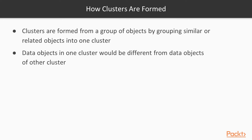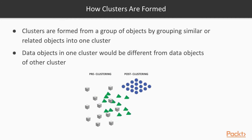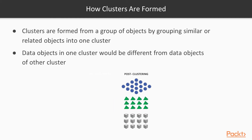Clusters are formed from a group of objects by grouping similar or related objects into one cluster. Data objects in one cluster would be different from data objects in another cluster. As shown in the example, before clustering all the objects are mixed. After clustering, similar objects are grouped together — all the balls are together, then triangles are together, and squares or cubes are together.